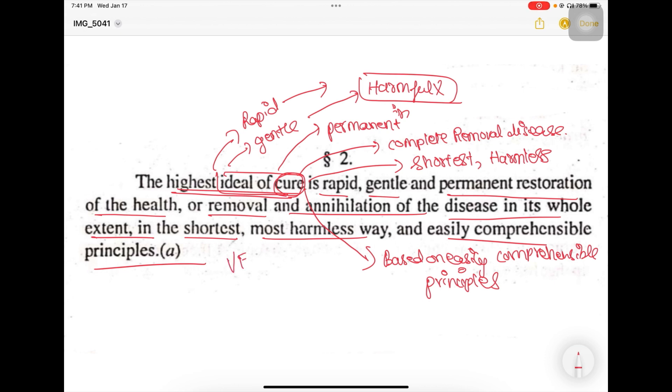We have the vital force, which in its state of equilibrium, whenever the vital force is functioning harmoniously, we are in a state of health. But whenever the vital force is deranged, a deranged vital force will manifest itself in the form of symptoms, many symptoms. Now, this set of symptoms is going to be called as a disease. The set of symptoms is called as a disease.